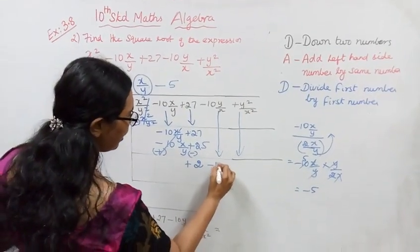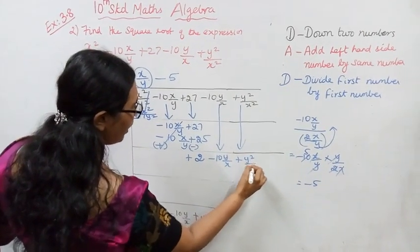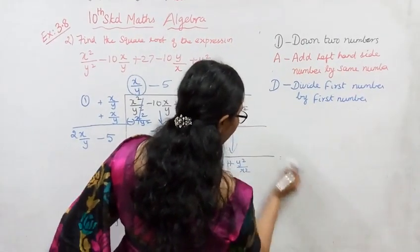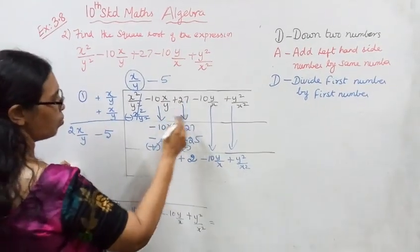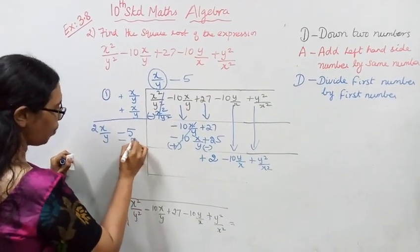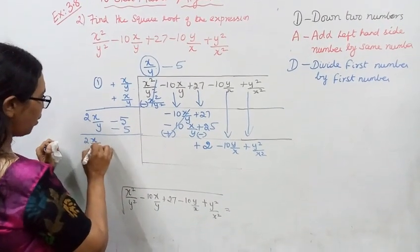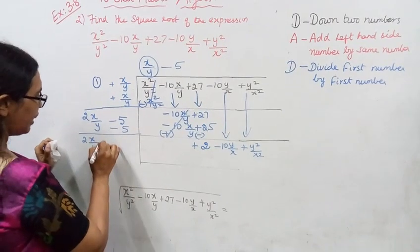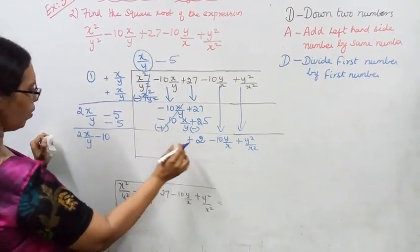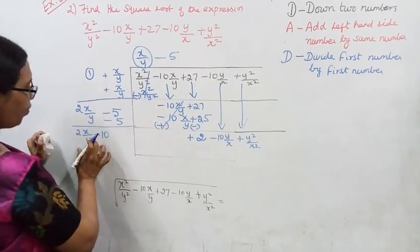Minus 10 y by x, plus y square by x square. Y square by x square. Now bring down 2 numbers. Add left-hand side number by same number. 2 x by y minus, minus, add: minus 5 plus 5 equals 10. Then divide first number by first number.